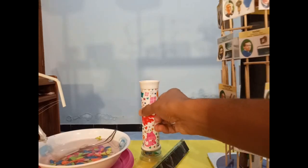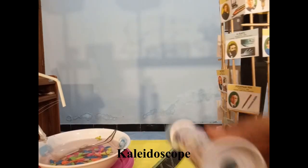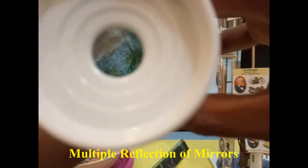Next project is a kaleidoscope. Inside some mirrors will be there. So I will bring it near to the camera. You can just have a look at the design. It works with the reflection of mirrors. You can make your own by using three pieces of mirror.